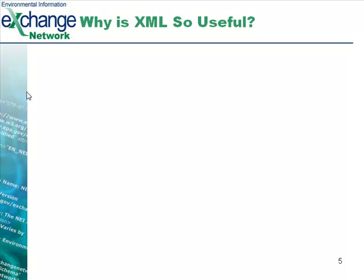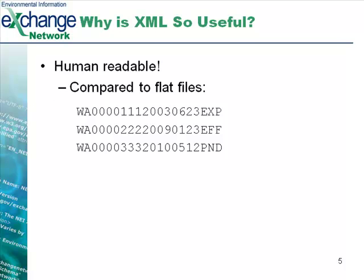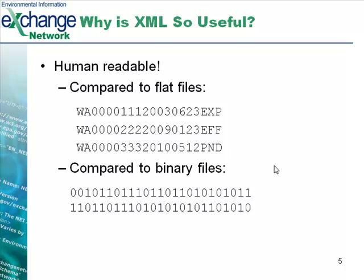So why is XML so useful? Well, first of all, it's human readable. If you compare XML to a legacy format such as a flat file, you can see already why it's so much more friendly for a human to read. On the screen we have an example of an old flat file showing the same information — the permit number runs right up against the permit issued date, which is 2003 June 23rd, followed by an abbreviation for the permit status. Without a data dictionary or some other documentation, it can be awfully difficult to interpret. XML is also much more readable compared to something like binary, which can't be interpreted by anything but a machine.